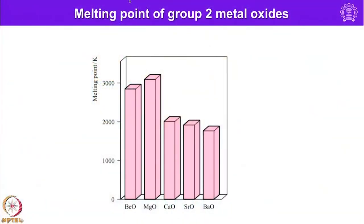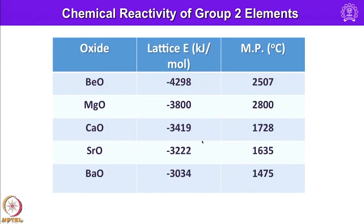When heated, calcium oxide is thermoluminescent and emits a bright white light — hence it is called limelight. The melting point is highest for magnesium oxide and steadily decreases down the group, complementing the trend in lattice energy. Beryllium oxide, with a very high lattice energy of 4298 kJ/mol, shows the highest melting point, and as lattice energy decreases, melting point decreases as well.